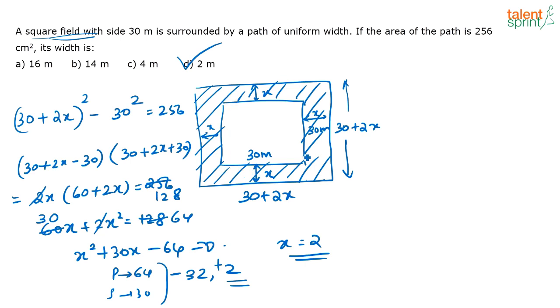see you know this square, this is 30 into 30. This area is 30 into 30, right? 30 into 30 is the area of the inner square. Now you know the area of this shaded region also. That is equal to 256. So the area of this outer square is nothing but 30 into 30 plus 256.